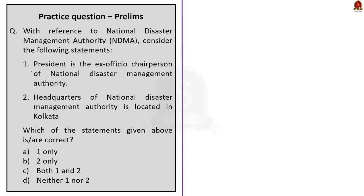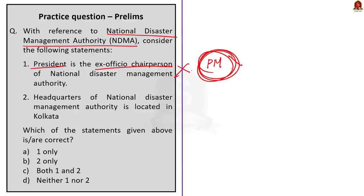Third question: with reference to National Disaster Management Authority, consider the following statements. Statement 1 — President is the ex-officio chairperson of National Disaster Management Authority. This is incorrect; the Prime Minister is the ex-officio chairperson. Statement 2 — headquarters of National Disaster Management Authority is located in Kolkata. This is also incorrect; headquarters is located in Delhi. So the correct answer is option D — neither one nor two.